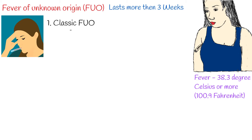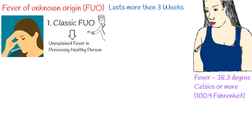Four main categories of fever of unknown origin exist. The first is Classic FUO, which is fever in previously healthy persons lasting more than 3 weeks. The most common causes of classic FUO are infection, malignancy, and collagen vascular disease.